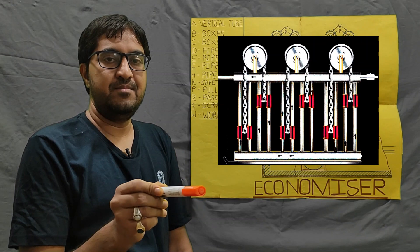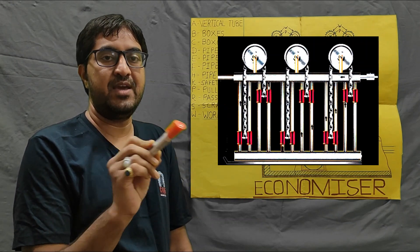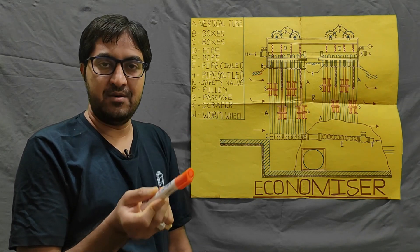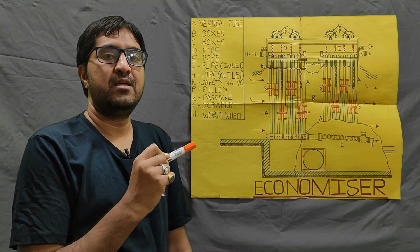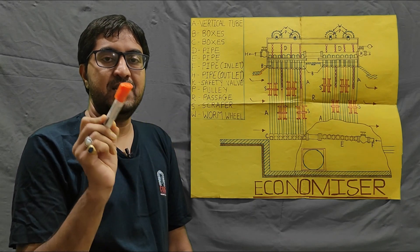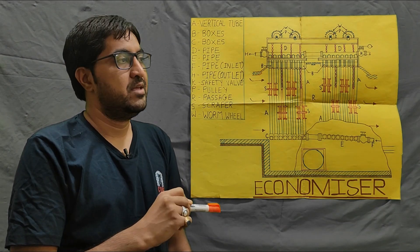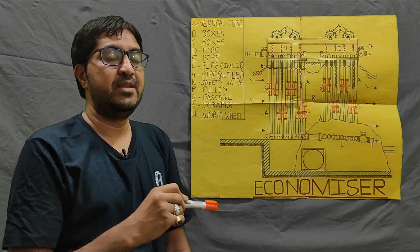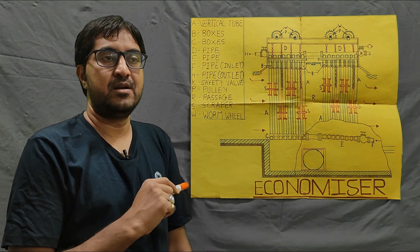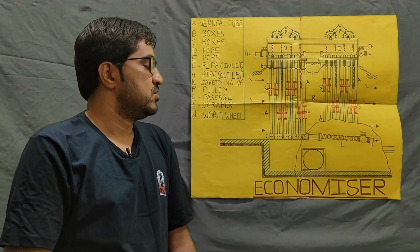First of all, what are mountings and accessories in the boiler? Mountings are those parts that are necessarily required in the boiler — without them we cannot operate the boiler. Examples include the safety valve, water level indicator, and pressure gauge. Accessories are those parts which are not compulsorily required but are used to increase the efficiency of the boiler, like an air preheater or economizer.